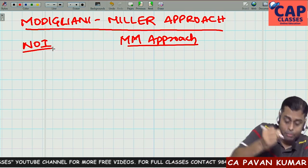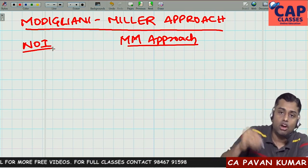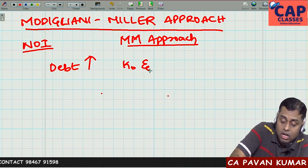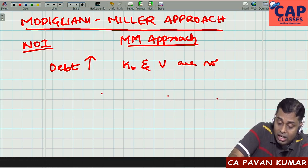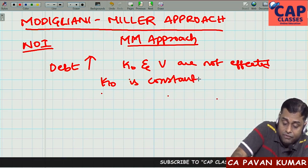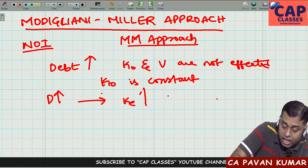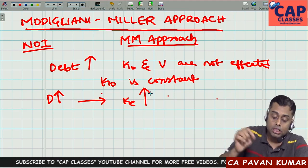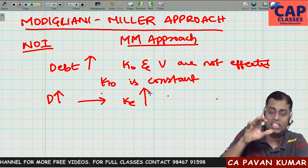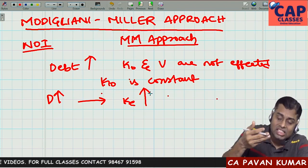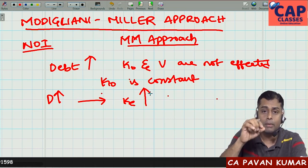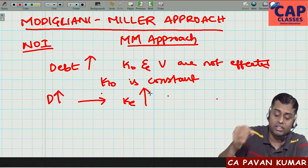Let us recollect the net operating income approach. According to that approach, if debt increases, KO and the value of the firm are not affected — KO is constant. If debt increases, it will increase the cost of equity. This constant overall cost of capital approach, though theoretically sound, did not provide operational justification for how KO is calculated or why KO is constant. So net operating income approach failed in giving that operational justification.